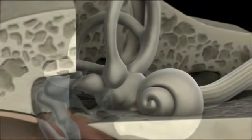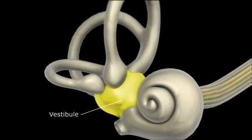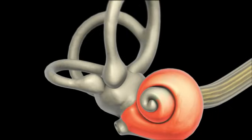The organ of Corti extends from the anterior part of the vestibule and coils for about two and a half turns around a bony pillar called the modiolus.